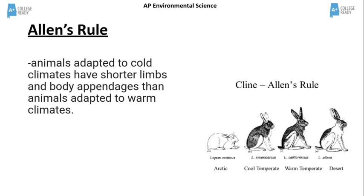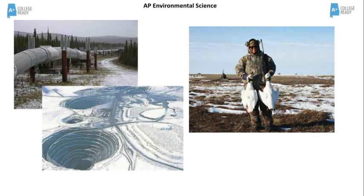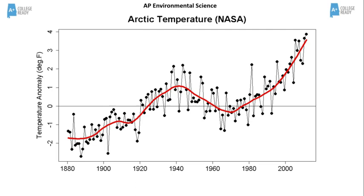Humans impact the tundra in many ways. Migration routes are disturbed when roads and pipelines are built. Oil spills and pollution contaminate the fragile environment. Hunting and fishing decrease animal populations. Nesting sites and spawning grounds can be destroyed. This graph shows the general trend of increasing temperatures in the arctic tundra between 1880 and approximately 2010.